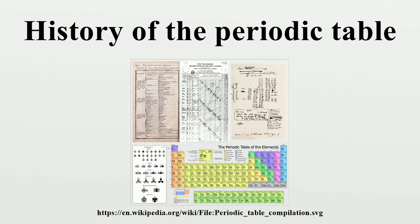On March 6, 1869, a formal presentation was made to the Russian Chemical Society, entitled The Dependence Between the Properties of the Atomic Weights of the Elements. In 1869, the table was published in an obscure Russian journal and then republished in a German journal, Zeitschrift für Chemie. In it, Mendeleev stated that: